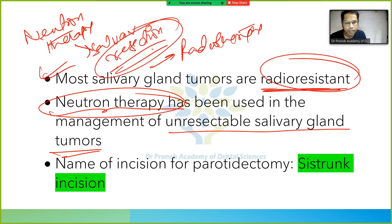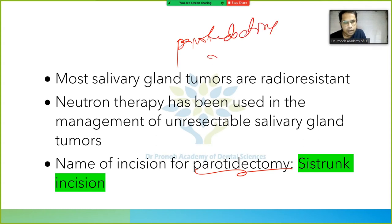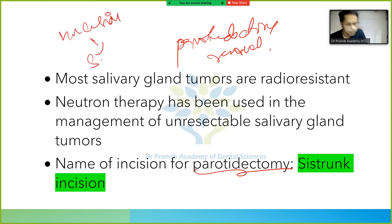The name of the incision for parotidectomy is the Cisterni incision. Parotidectomy means removal of the parotid gland. A picture of the Cisterni incision will be shown in the next class.